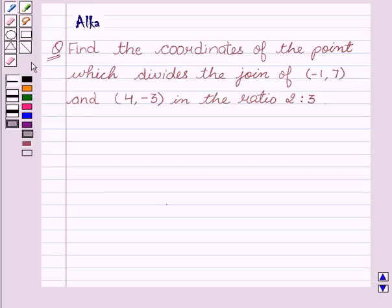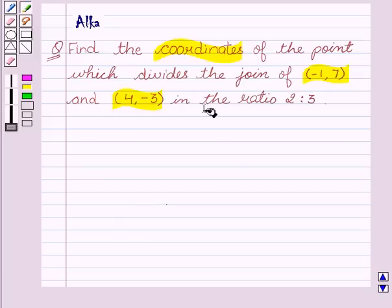Our given question is: find the coordinates of the point which divides the join of (-1, 7) and (4, -3) in the ratio 2:3.